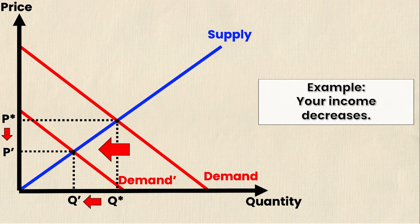Now no matter how big or small the shock, this will always be the case. That is, if supply doesn't move, then if demand decreases or the demand curve shifts left, then price and quantity in equilibrium will always fall. It does not matter how big the shift is.